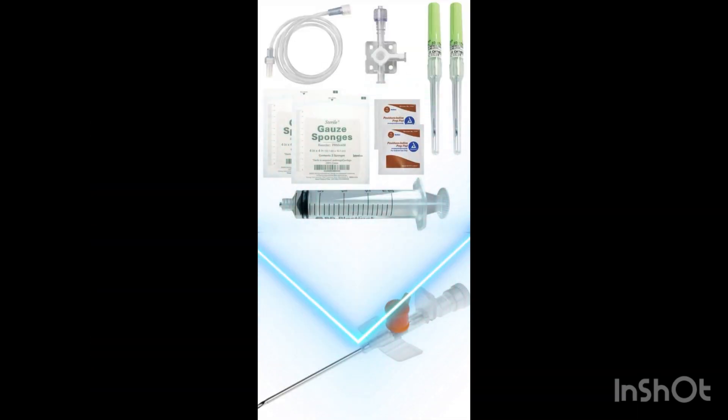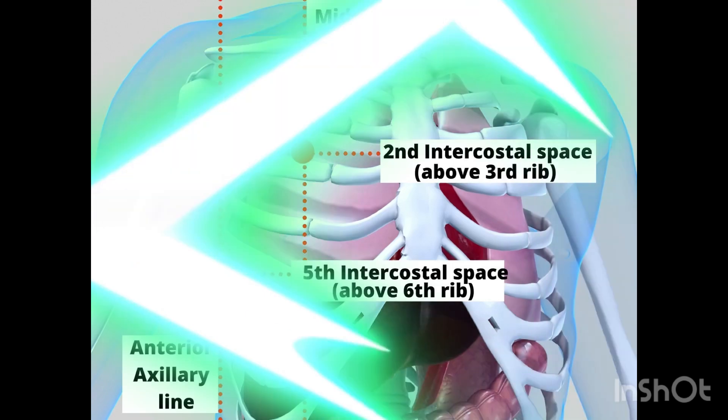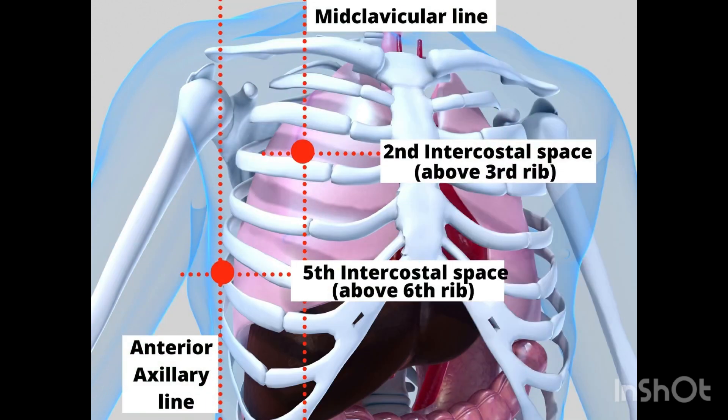In needle decompression, it's important to gather all necessary equipment for the procedure. The preferred insertion site is the second intercostal space in the mid-clavicular line above the third rib, or in the fifth intercostal space, mid anterior-clavicular line, above the sixth rib.